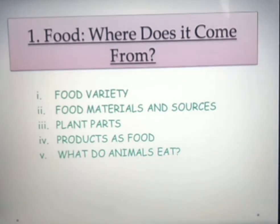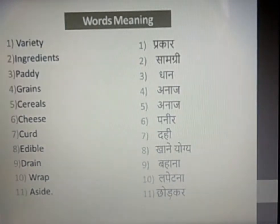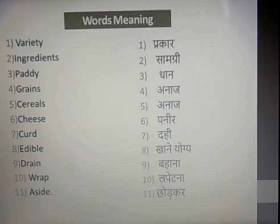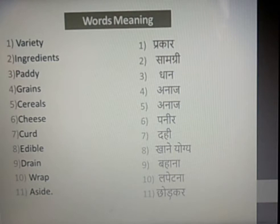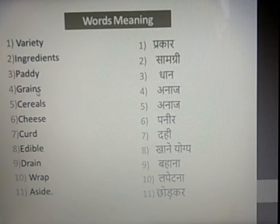So we go to the next slide. Here I have mentioned some words which are important to know before starting the topics of this chapter. Variety means Prakar, Ingredients means Samagri, Paddy means Dhan, and Grains means Anaaj.